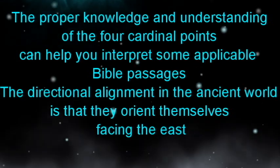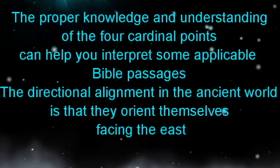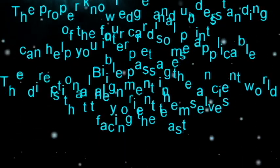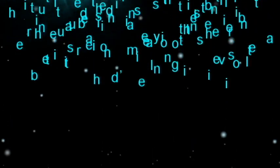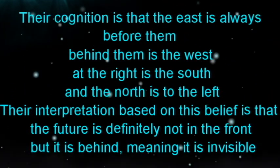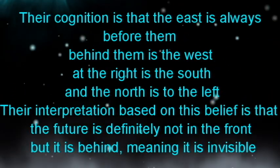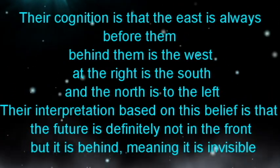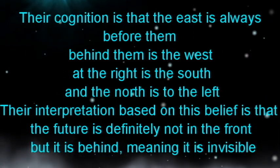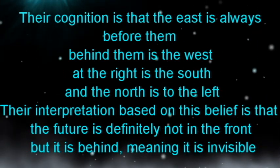The directional alignment in the ancient world is that they orient themselves facing the east. Their cognition is that the east is always before them, behind them is the west, at the right is the south, and the north is to the left.